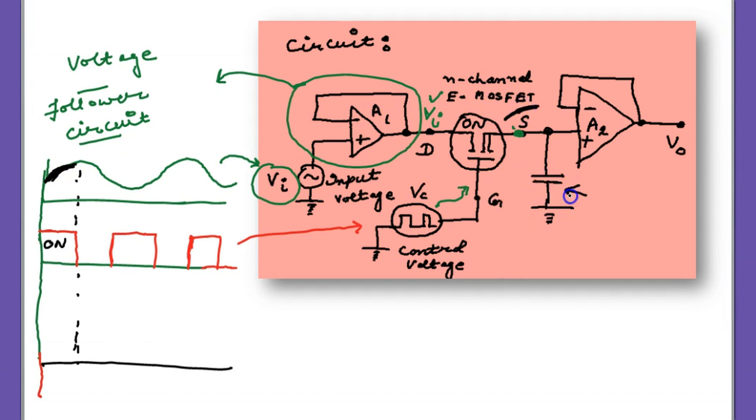Then that voltage is applied to the second op, and the capacitor starts charging. With this voltage it charges up to the same level. Again this is a voltage follower. Then that voltage also passes to the second op, and we get an output exactly of the same shape as that of the input.